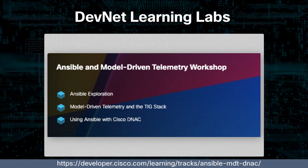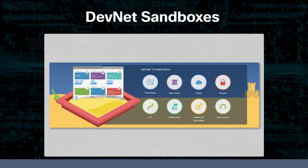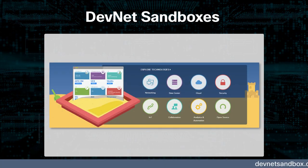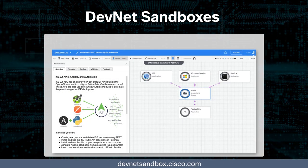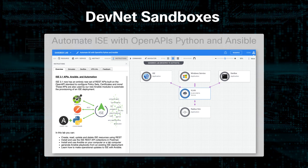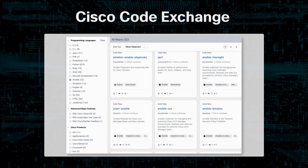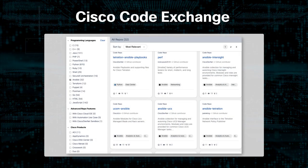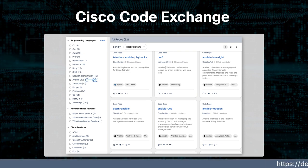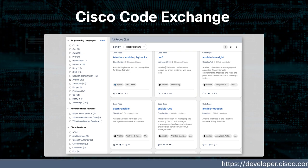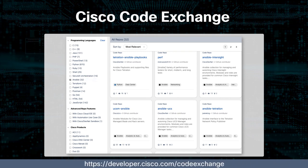A favorite offering is the Ansible and Model-Driven Telemetry workshop, which combines and ties together several of those modules. Some learning labs make use of the free DevNet sandboxes at devnetsandbox.cisco.com, and there is currently a sandbox dedicated entirely to APIs, Ansible, and automation — called Automate ISE with Open APIs, Python, and Ansible. Cisco Code Exchange is the place to discover code repositories related to Cisco technologies, currently with 32 repos written entirely in Ansible for technologies such as ISE, ACI, NSO, Tetration, and more.